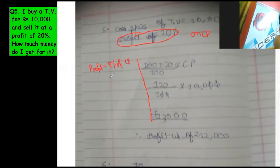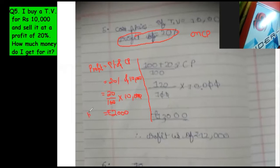So you can find 20% of CP. CP is 10,000. 20 upon 100 into 10,000. The zeros get cancelled. So 100. No, not 200. 2,000 rupees. This is the profit.